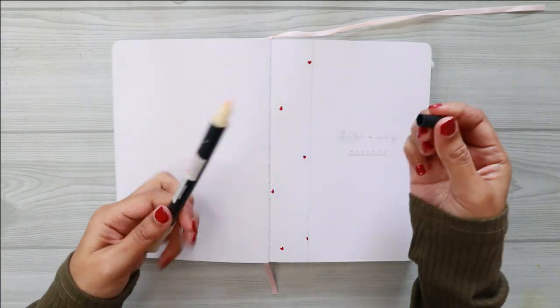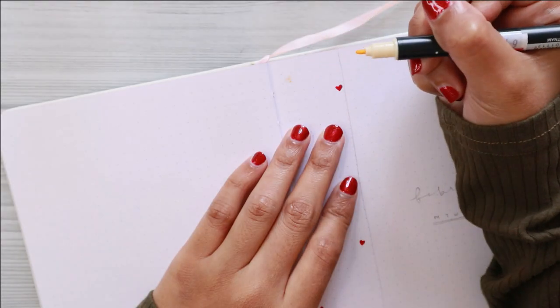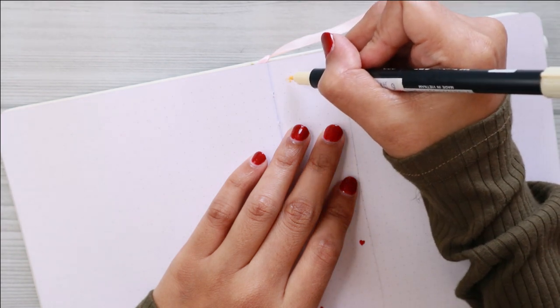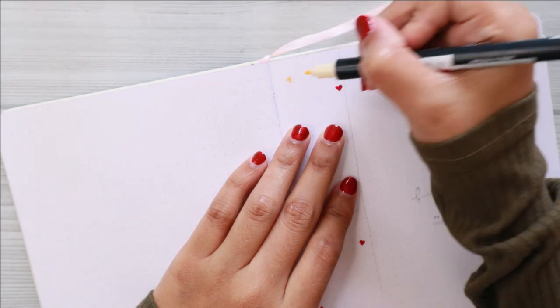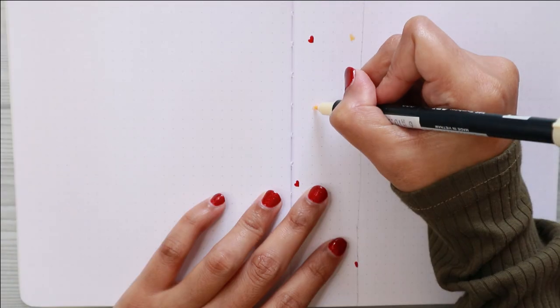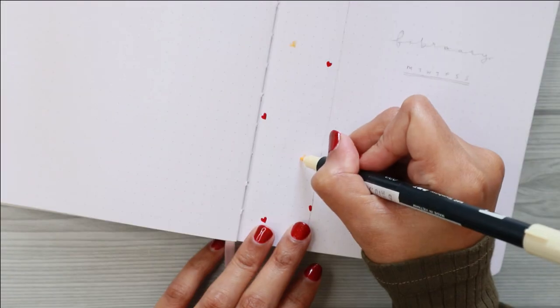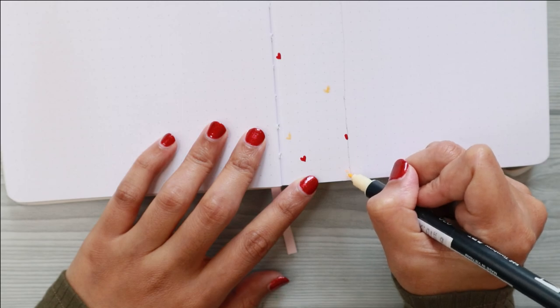I found out that using this fine tip is actually very helpful to draw smaller things because I can have more control. After I am done with that, I use my Tombow Fudenosuke soft tip to add some details on this cover page.